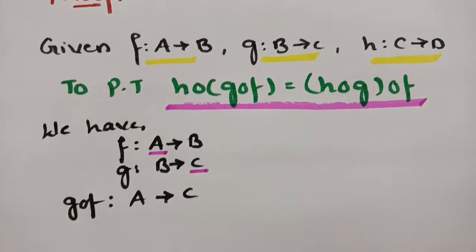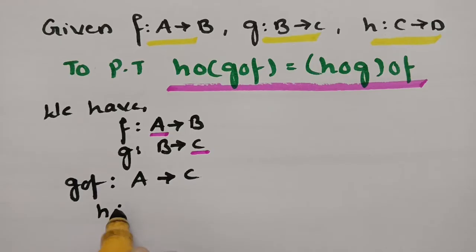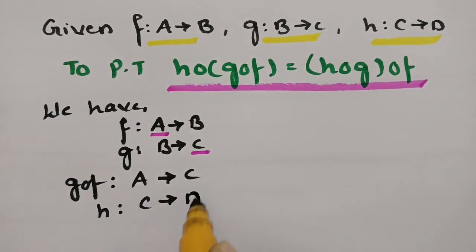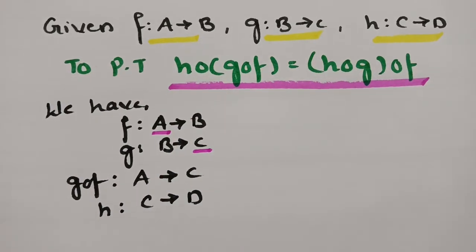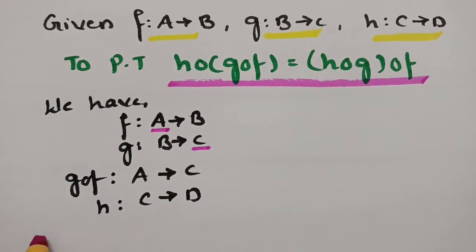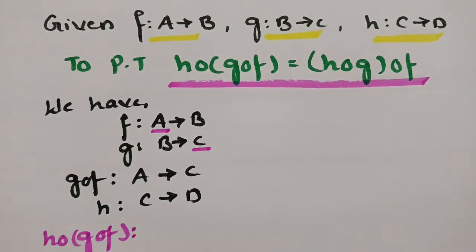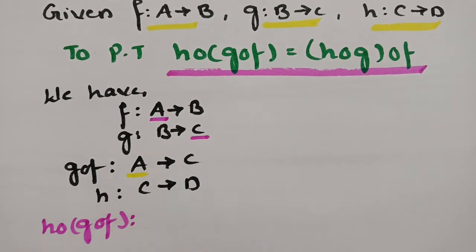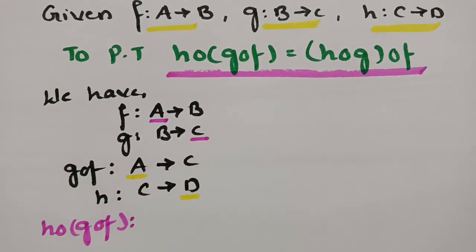Now we have to check with H. H maps from C to D. For the composition H∘(G∘F), we go with G∘F, which starts from A. There is a common set C, and it ends with D. Therefore H∘(G∘F) maps from A to D.